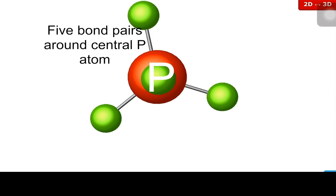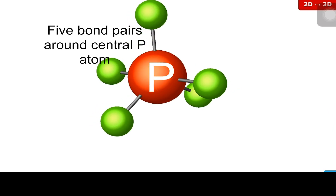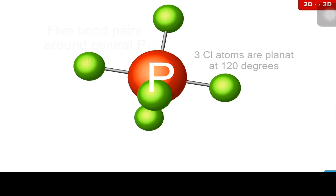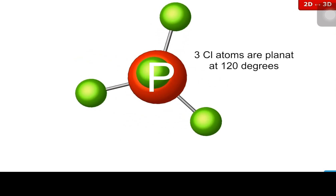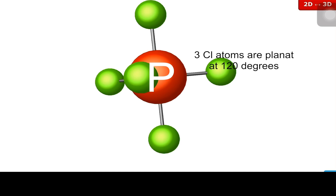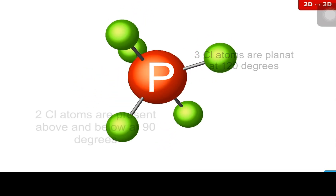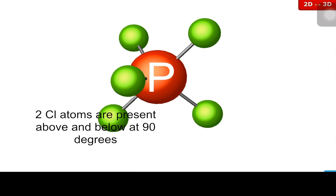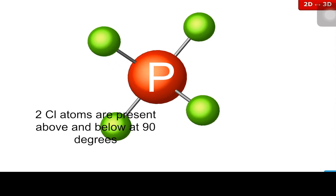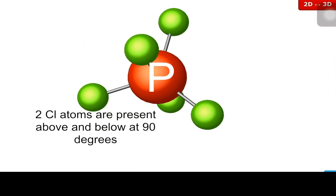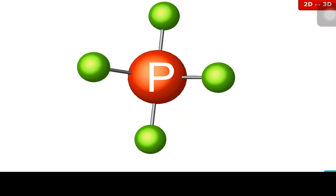There are five bond pairs around the central phosphorus atom. Three chlorine atoms are on the same plane while the other two are at 90 degrees above and below. It's really important to know how these shapes are made and what they represent, because their properties are often determined by their bond angles.